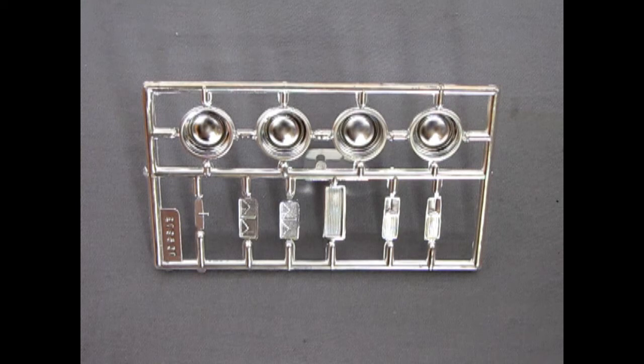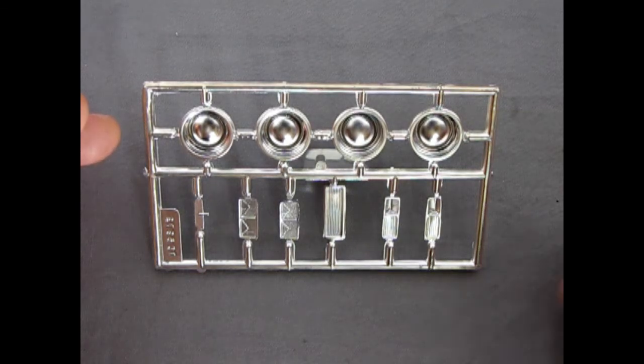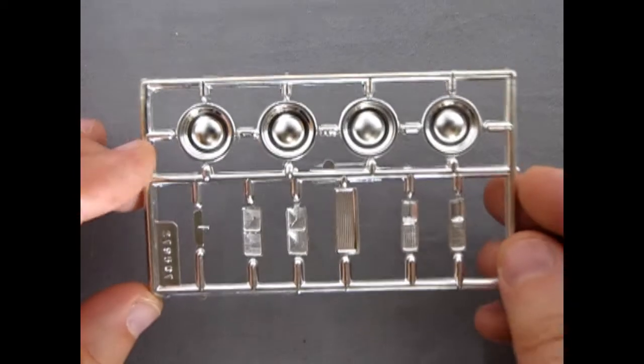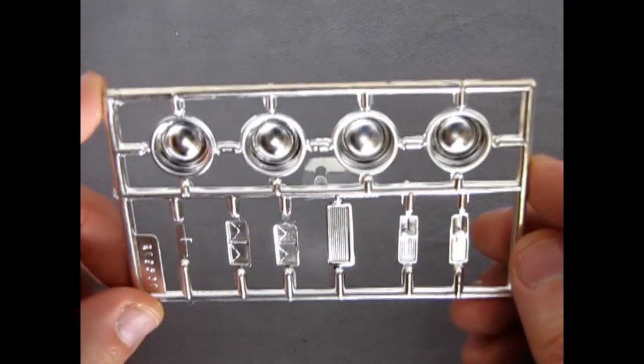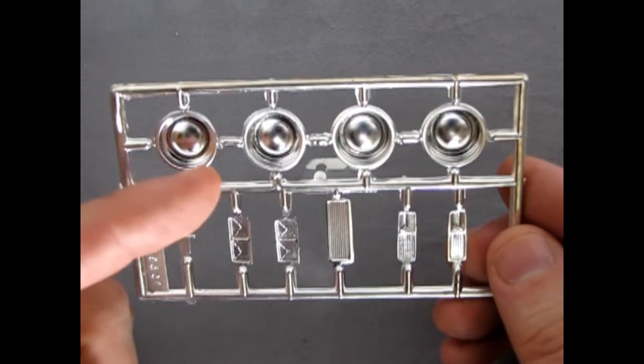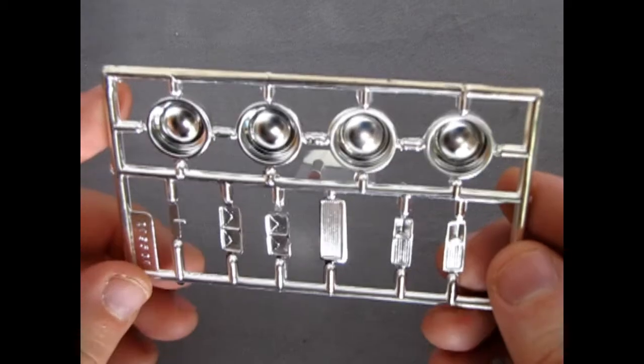And here we have our chrome components for our 77 pacer. Now unfortunately for a custom car, there is not really much chrome on this at all. We have our nice baby moon hubcap wheels here, which are very beautiful.